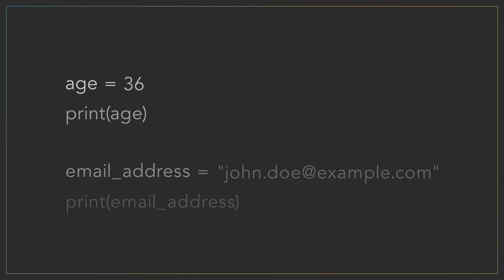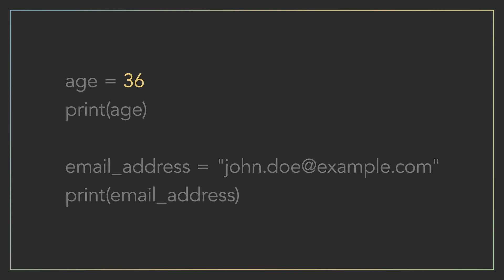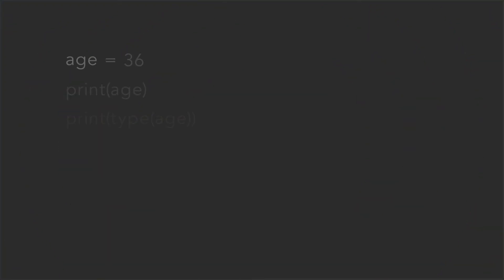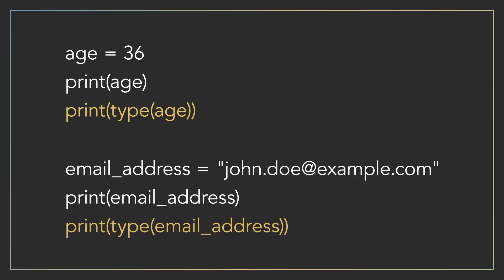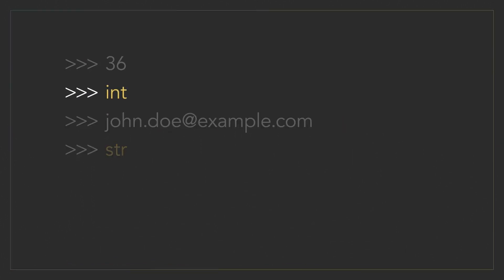This is because we want the variables to represent different data types. A data type allows us to put our variable in a particular category so that the computer knows how much space to give us in its memory, and it generally knows how we plan to use our variable later on in the program. In this example, the 36 is an integer — a whole number with no decimal places. The letters and symbols inside the double quotes is called a string, because it's made up of a string of characters. You can check the type of any value or variable in Python by using the type function. The age is int, short for integer, and the email address is str, short for string.